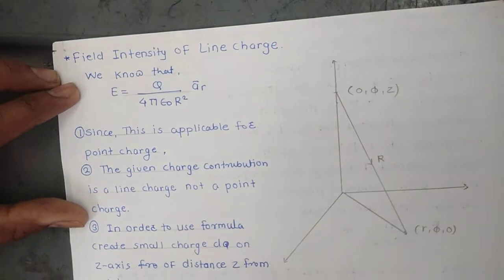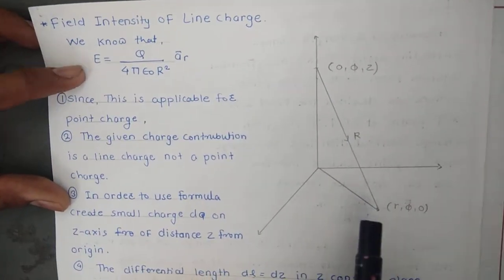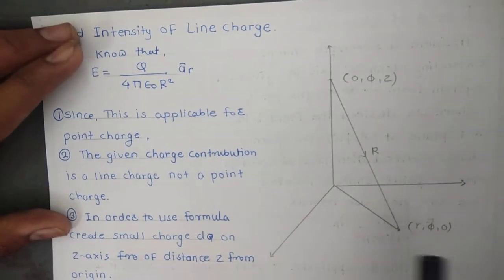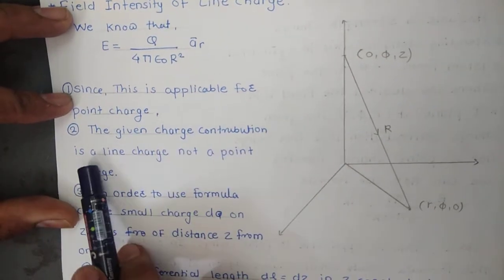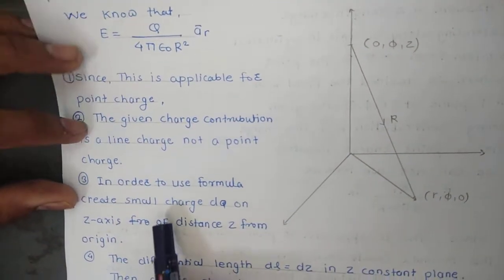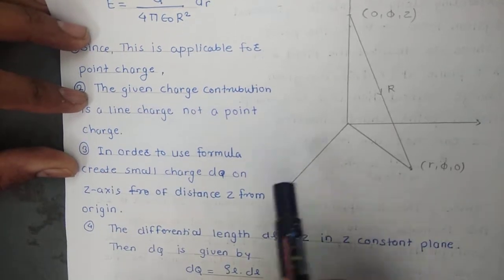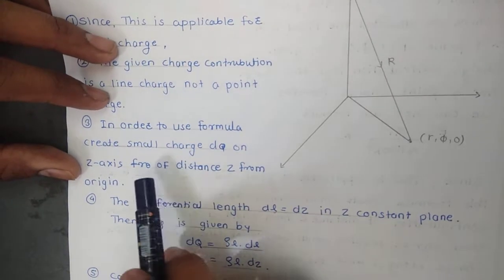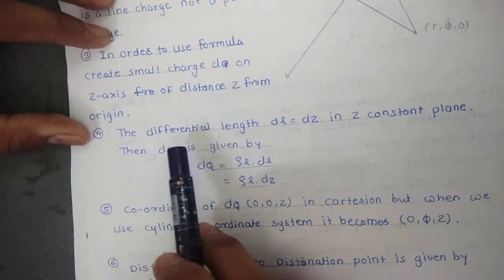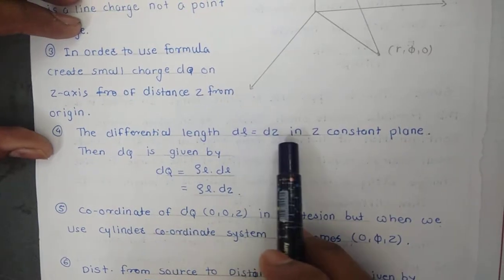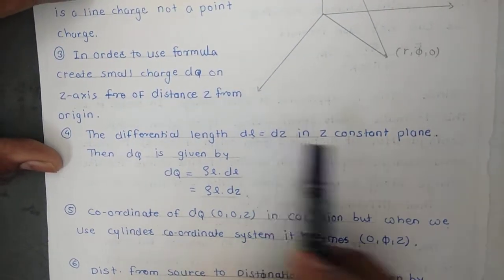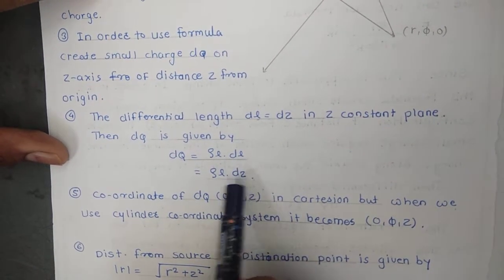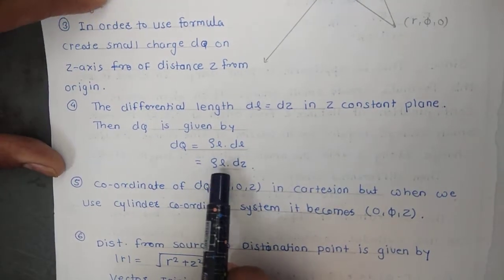The field intensity for line charges. Here is the diagram for the field intensity of line charges. We know that E equals Q upon 4pi epsilon-0 R-squared into AR, but since this is applicable for a point charge and the given charge contribution is a line charge, we create a small charge DQ on the Z-axis at a distance Z from the origin. The differential length DL in the Z direction is given by DL equal to DZ, then DQ equals rho-L times DZ.